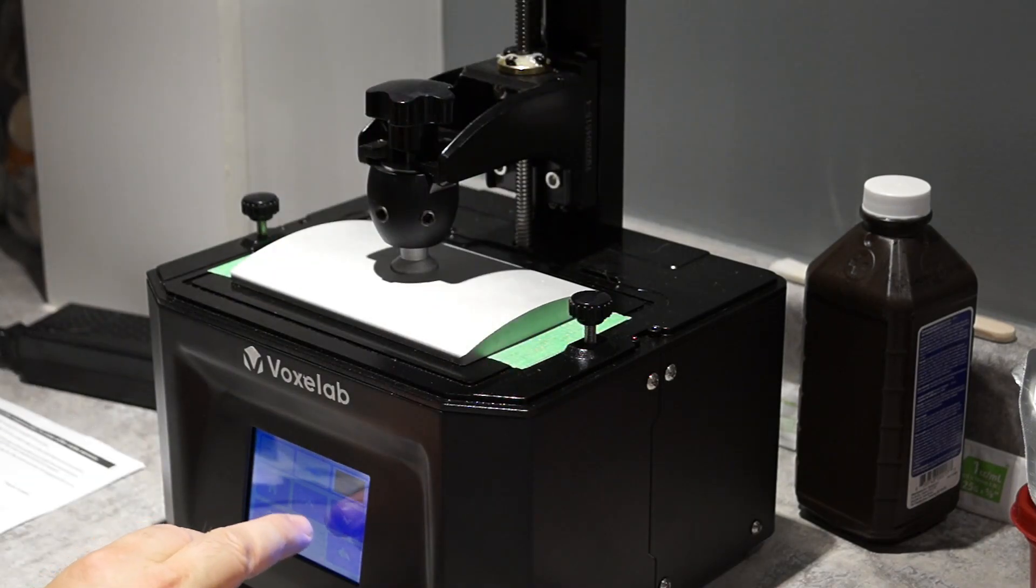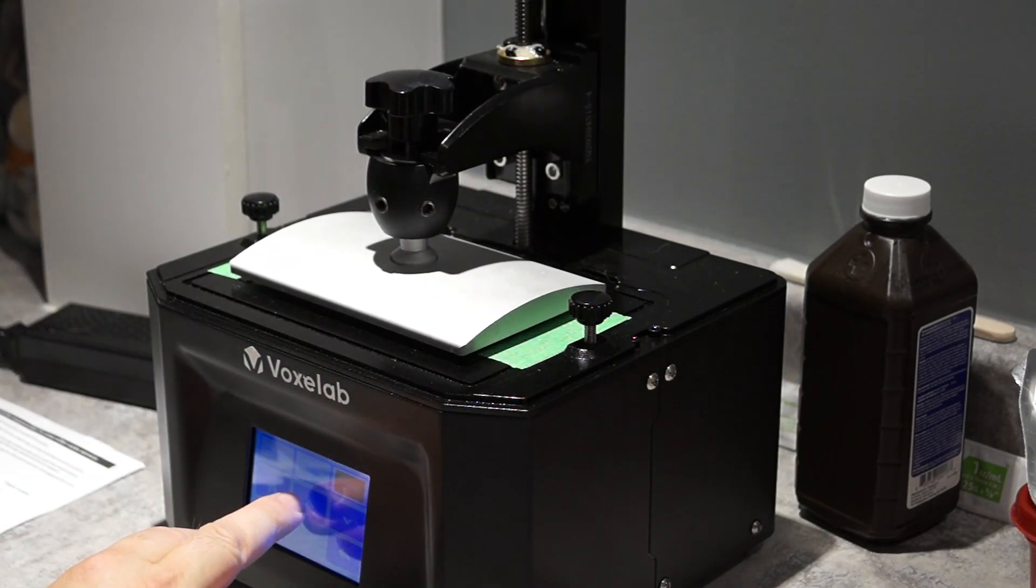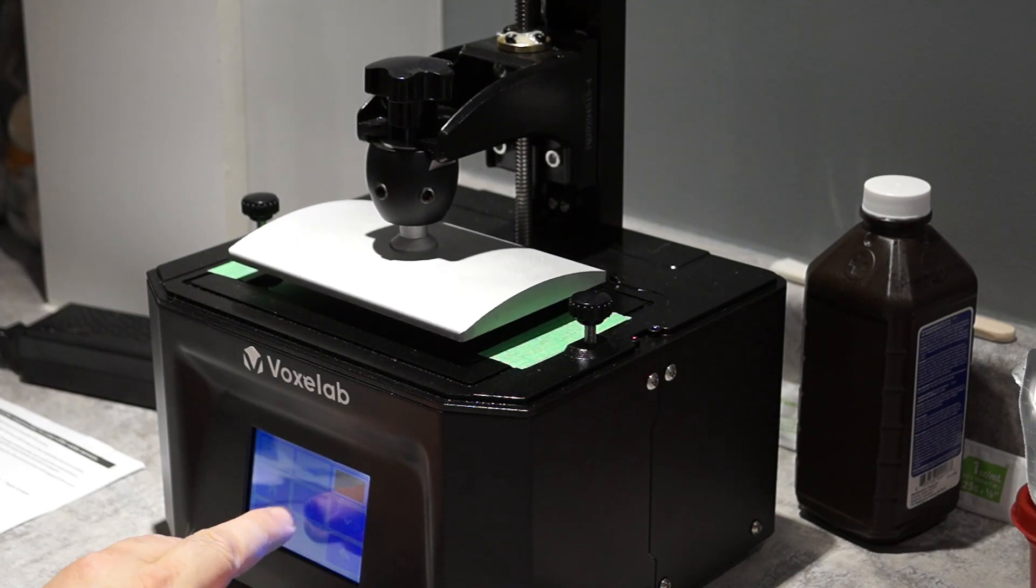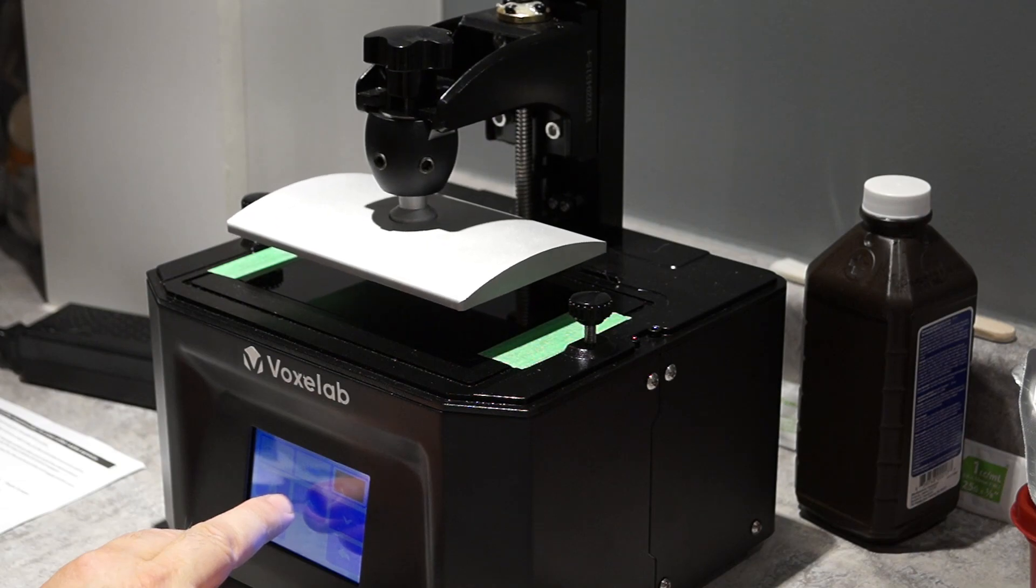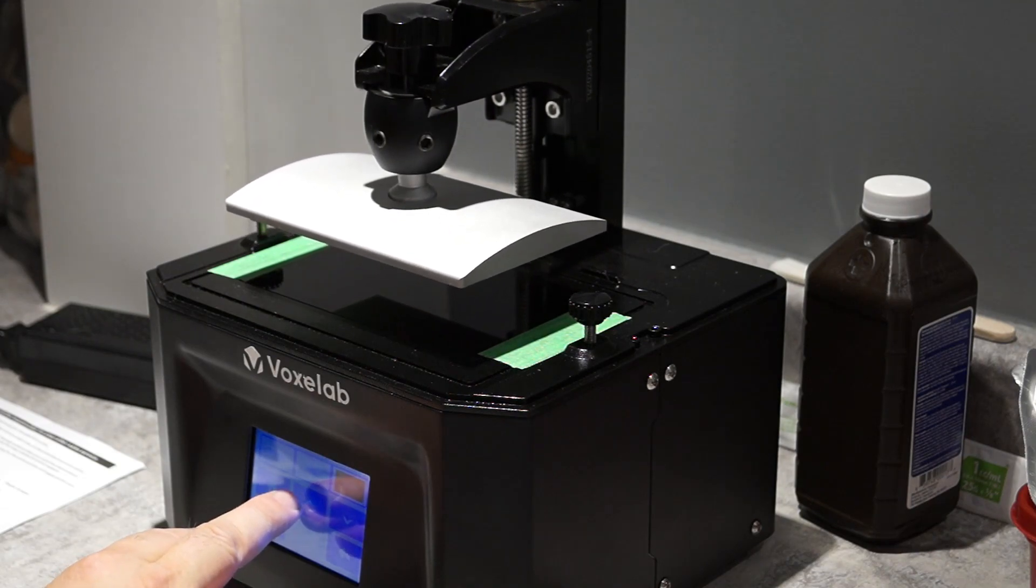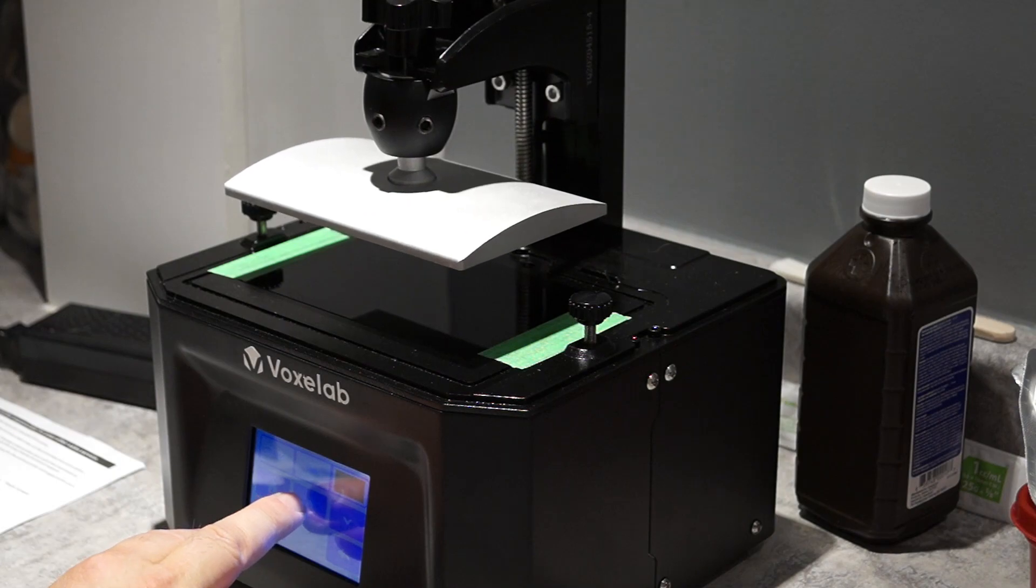Now I did omit one step here. After that point where you test for friction, you're supposed to go back one menu and hit the zero button. The zero is the z-axis so that this way the printer knows that that's where it's properly calibrated.